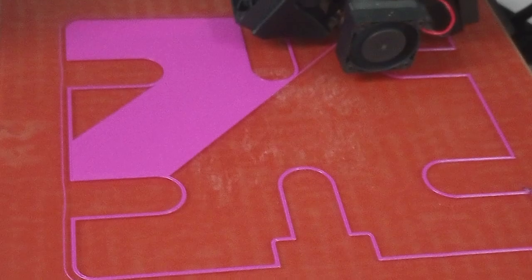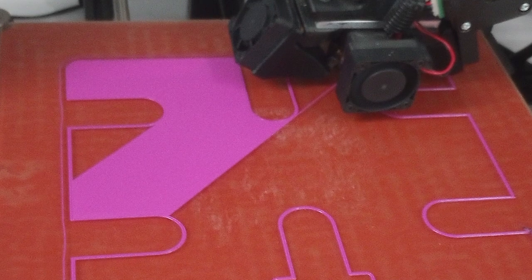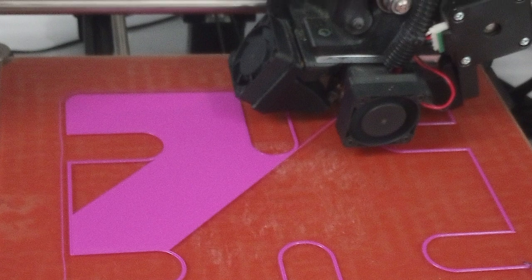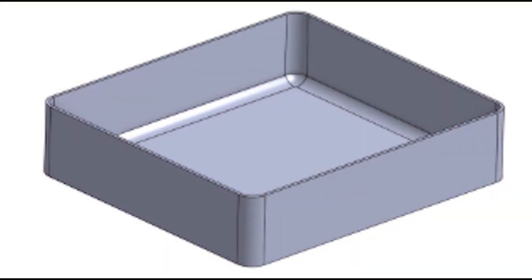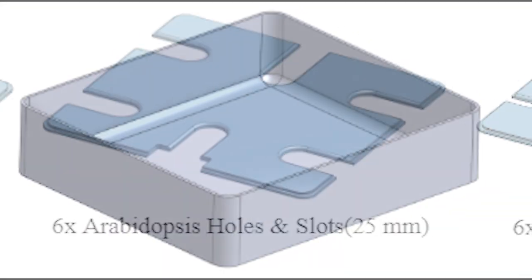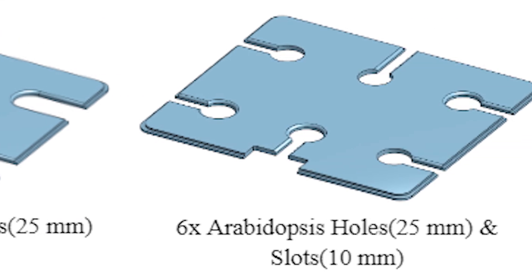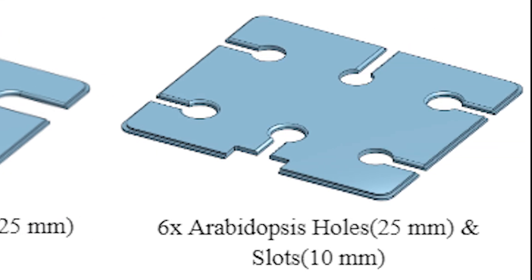The basins and their lids were 3D printed in-house with PLA filament and then tested to ensure they didn't leak. The basins and lids were designed so that they could be reusable for continuous generations of plants, making gardening in space more sustainable.